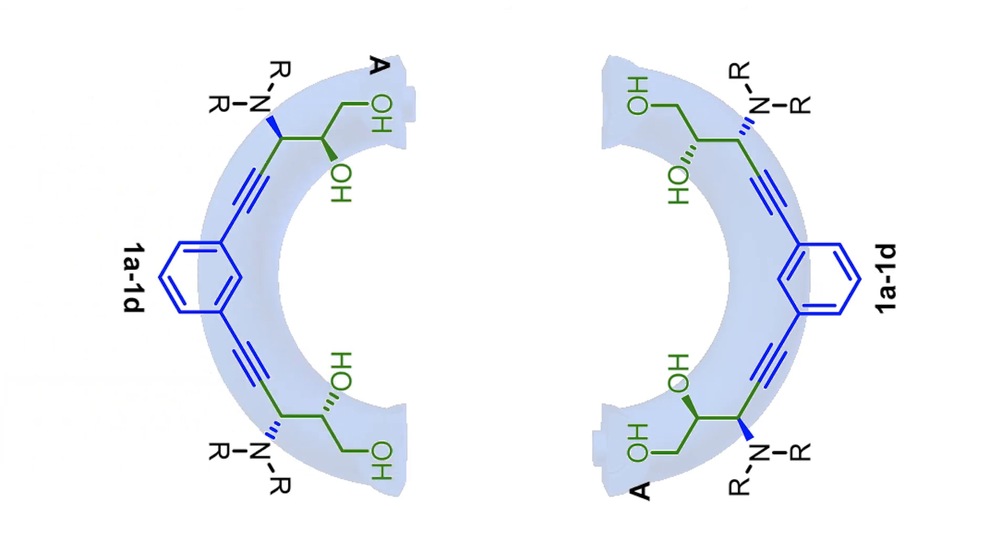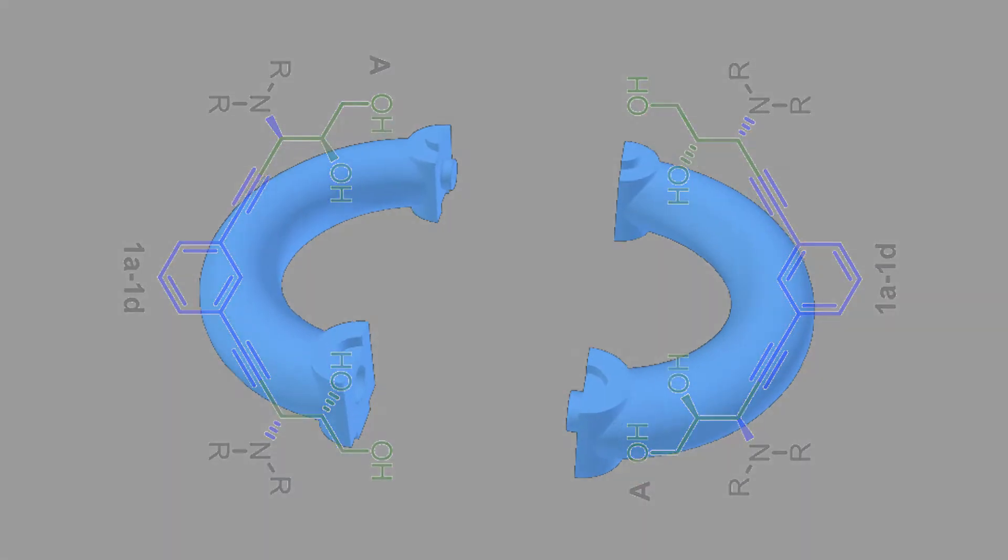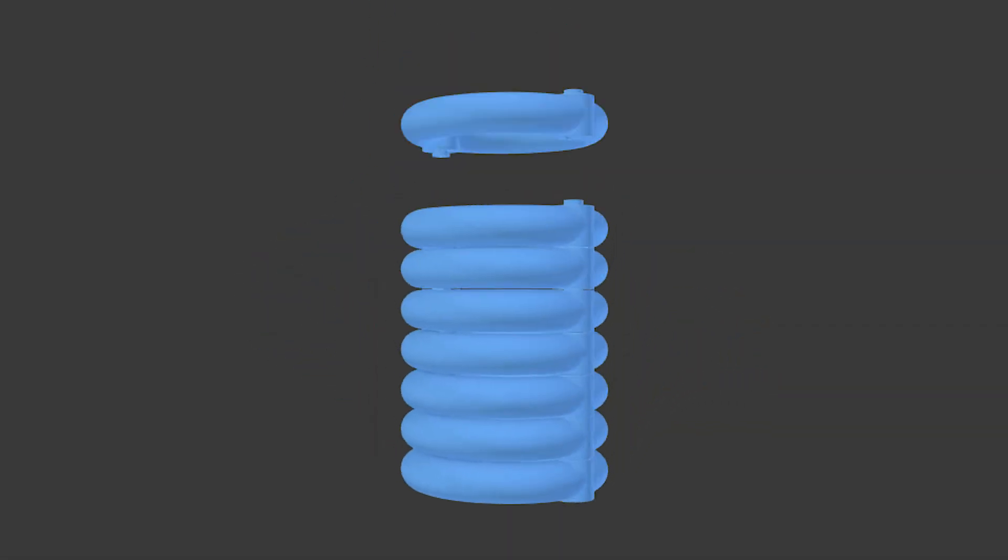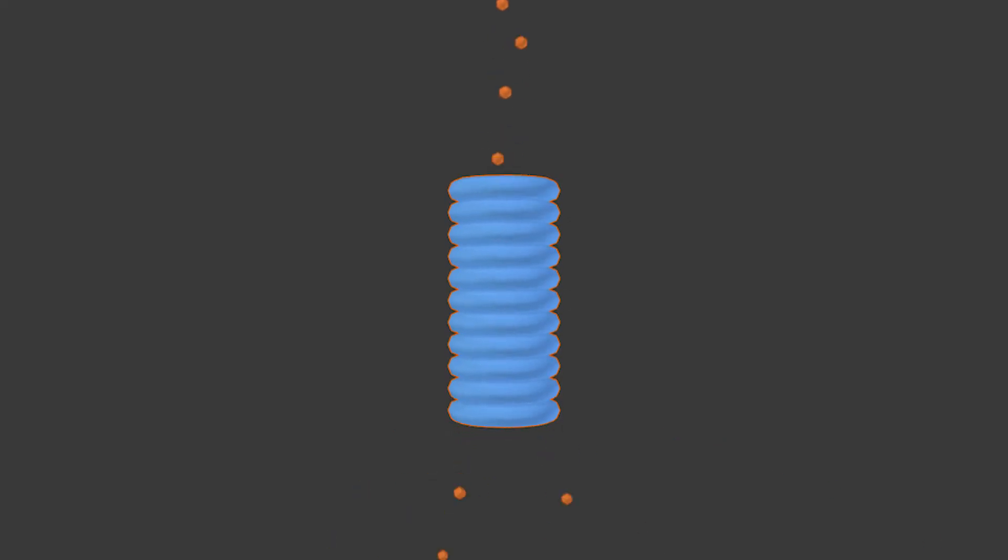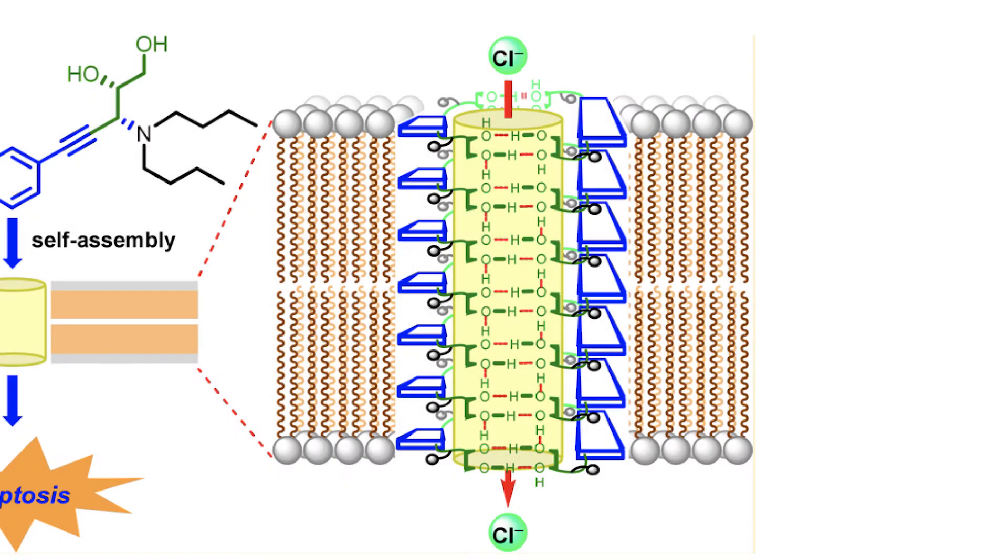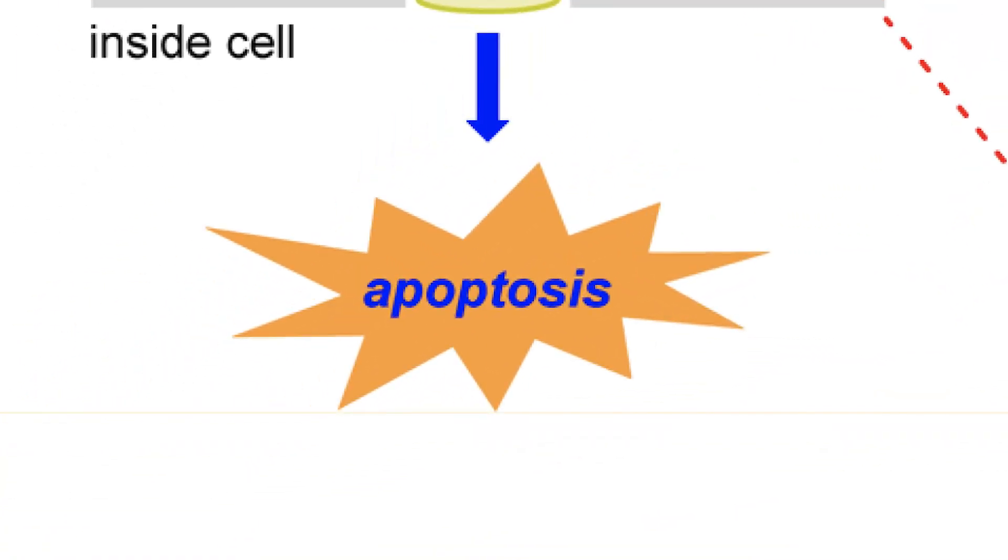The synthetic molecule is like a gateway through which chloride ions can cross the cell membrane. Once inside in large amounts, the ions can instruct the cell to kill itself. Considering the well-known relation between apoptosis and cancer, our